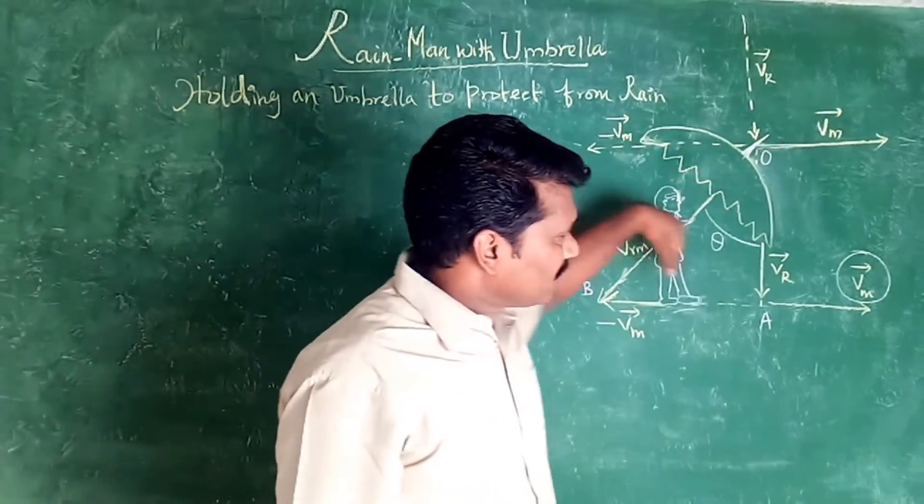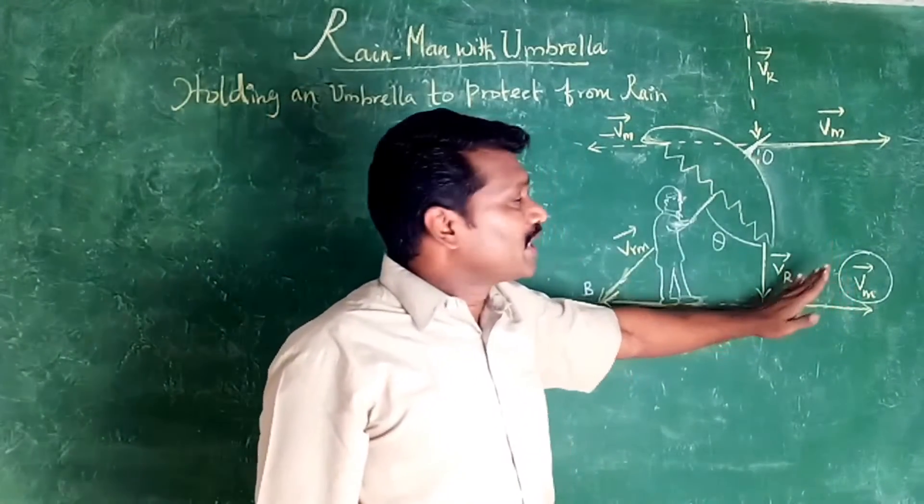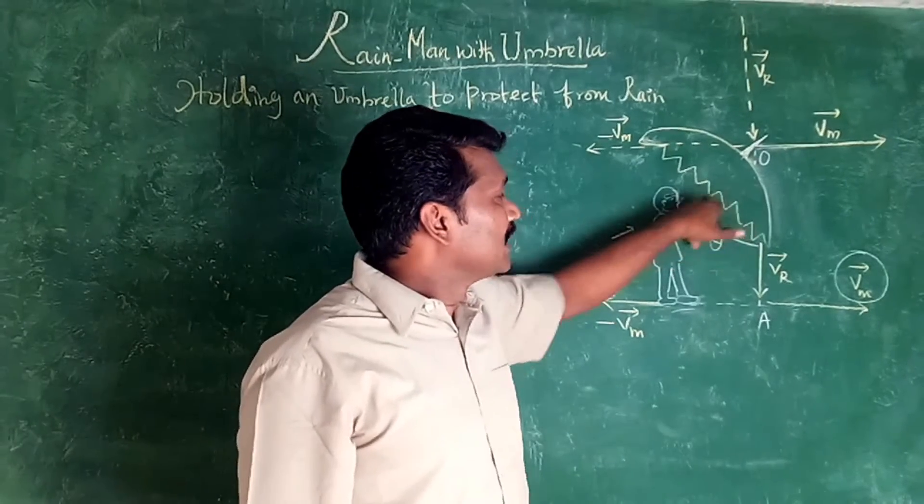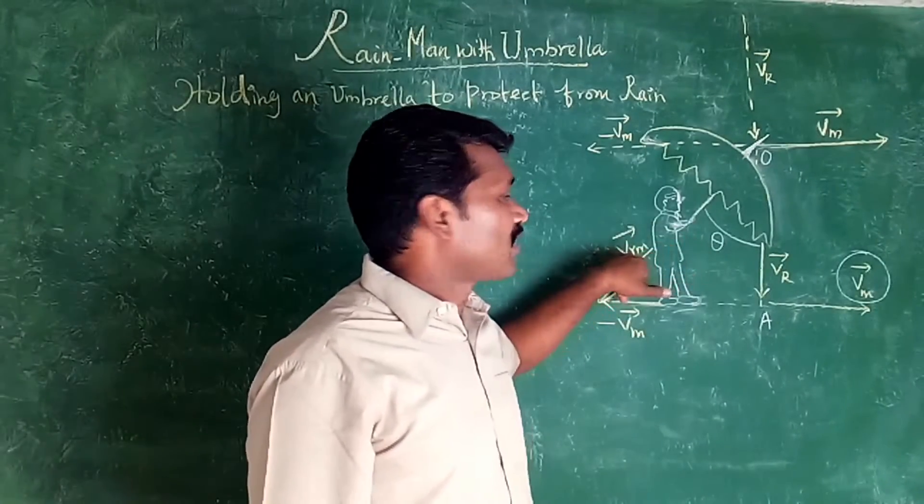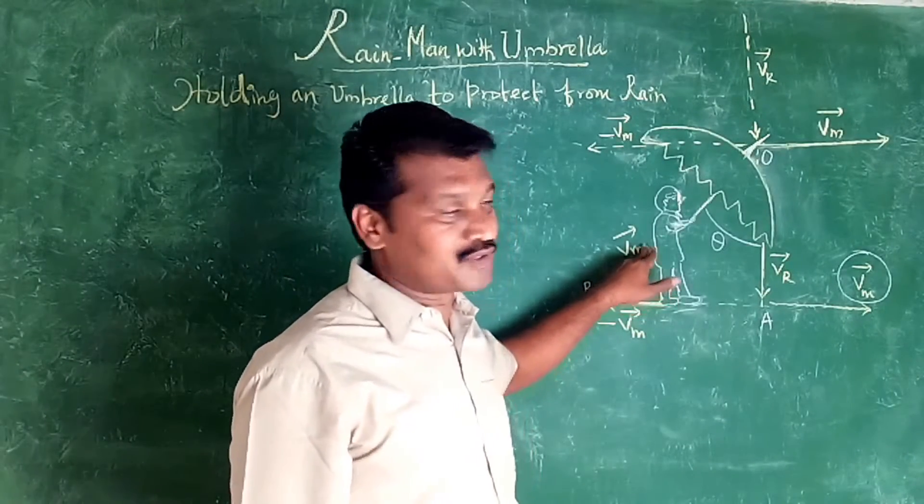He is moving from left to right. So he is holding like this. That is why the resultant velocity Vr on the rain, the velocity of rain with respect to man.